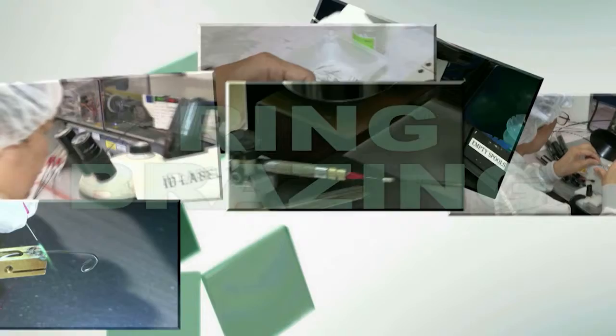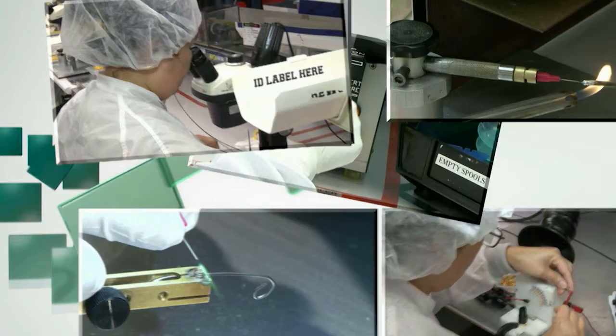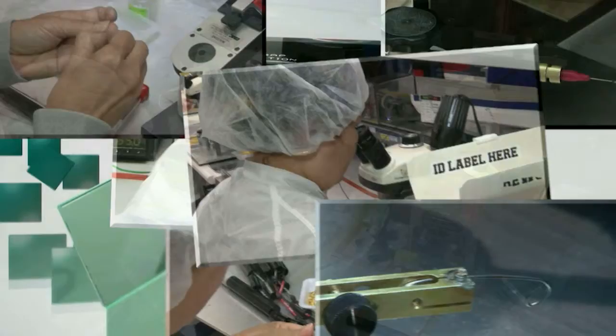Ring brazing is an important step in the manufacturing of catheter assemblies. Doing it correctly requires skill and care. Correct brazing will help create a product that is effective and safe for patients.